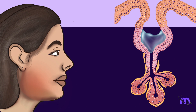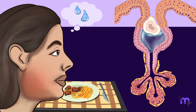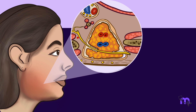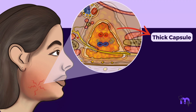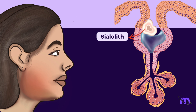Pain and swelling during meals occur because mastication stimulates salivary production. A block in the duct due to a sialolith leads to salivary pooling within the duct, leading to expansion. Since the gland is surrounded by a thick capsule, it has limited space to expand, causing pain. If the blockage is partial, some saliva might still squeeze through, allowing the swelling to gradually go down after eating.